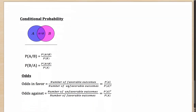Moving on to conditional probability. What is the probability of event A happening, given that B has already occurred? If B has already occurred, my entire sample space is now just the portion of B. The favorable outcomes are A intersection B. So the probability is P(A intersection B) divided by P(B). Conversely, the probability of event B happening given that A has already occurred is P(A intersection B) divided by P(A).